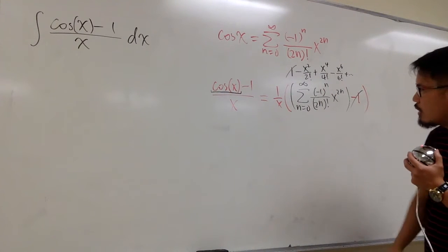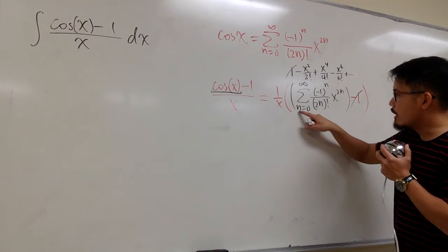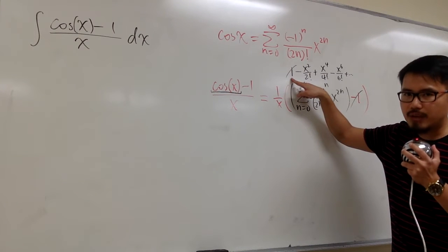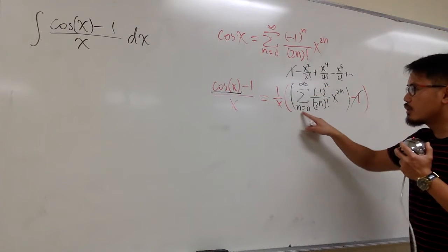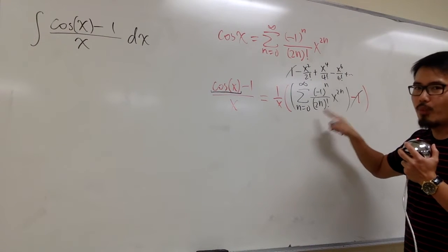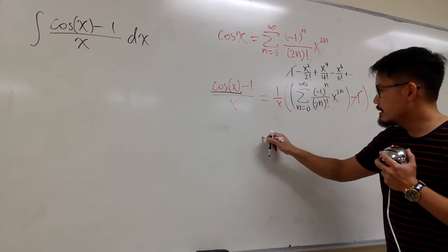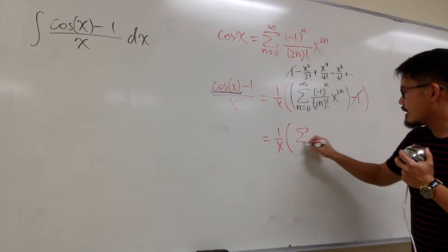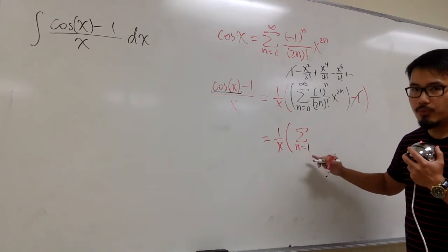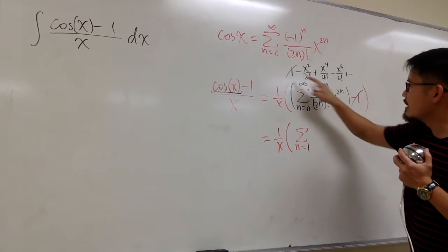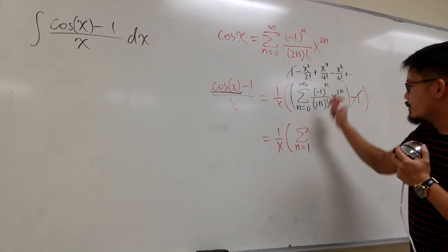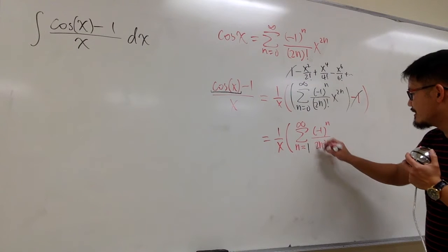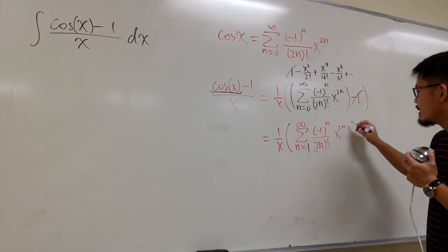So what does that do? Well, originally for cosine it goes from n equal to 0 to infinity, but then the first term — which was this 1 — got canceled out. So instead of n goes from 0, we will have n starting from 1, because we lost the first term. This is the same as 1 over x, multiplied by sigma when n goes from 1 to infinity. We lost the very first term because they cancel each other out. Then the rest is the same: negative 1 to the nth power over 2n factorial, times x to the 2n power.